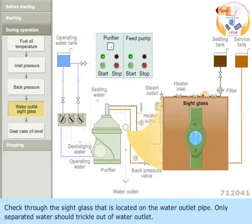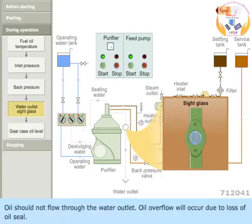Check through the side glass that is located on the water outlet pipe. Only separated water should trickle out of the water outlet. Oil should not flow through the water outlet. Oil overflow will occur due to the loss of oil seal.